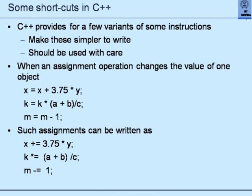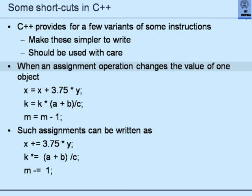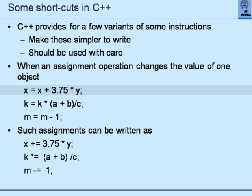These are some shortcuts available in C++. All they do is make instructions simpler to write, but they should be used with care because sometimes the abbreviations are so powerful that you could make a mess and not write semantically correct programs. For example, when you make an assignment operation which changes the value of the left-hand side object — X = X + something, K = K * something, M = M - 1 — observe that in each statement, the value on the left-hand side is being modified by multiplying, adding, or subtracting something.